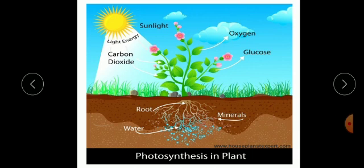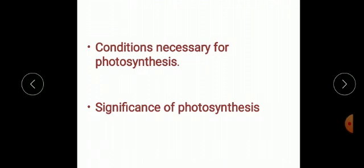Carbon dioxide combined with water in the presence of light and chlorophyll to produce glucose and oxygen. Today we will be discussing different conditions necessary for photosynthesis. Also we will be discussing significance of photosynthesis.